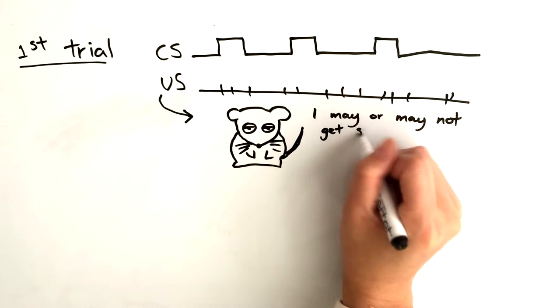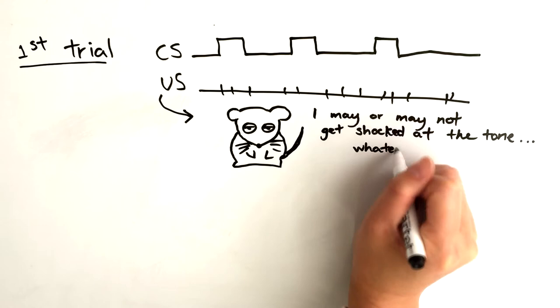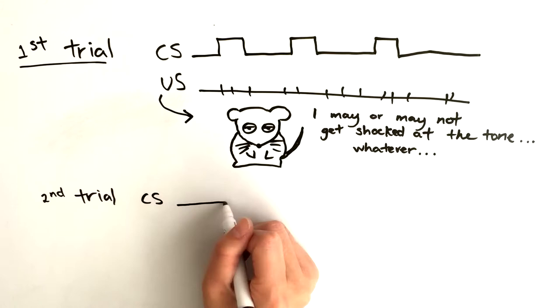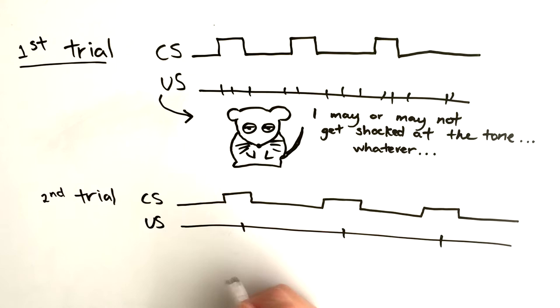That is, the conditioned stimulus must be meaningful to produce efficient learning. In the previous experiment, learning occurred in trial 2 because the shock was only presented with the tone. What influences the predictive value of the conditioned stimulus is largely determined by the base rate of the unconditioned stimulus.